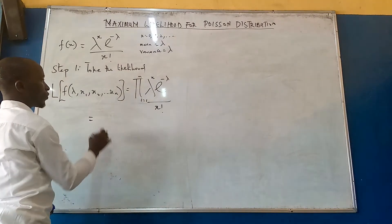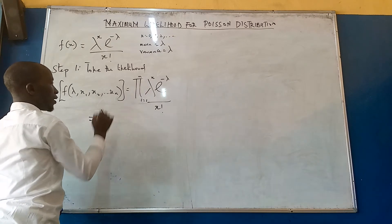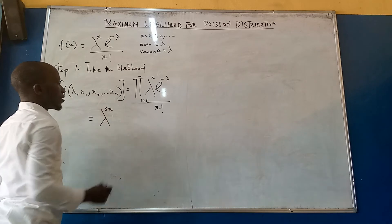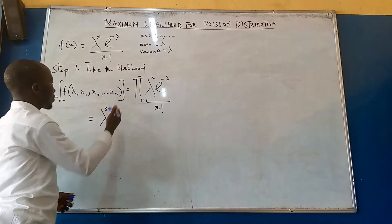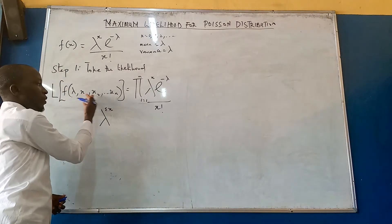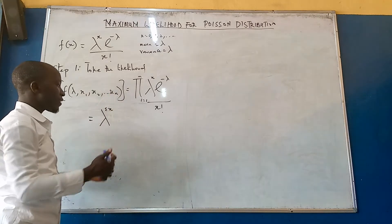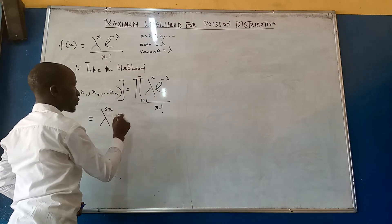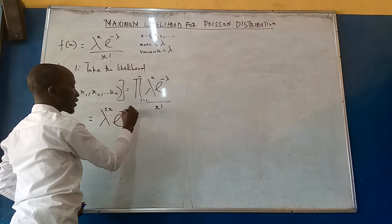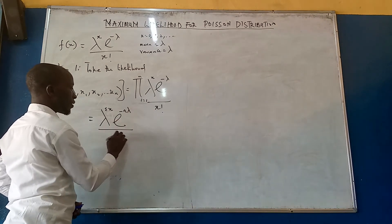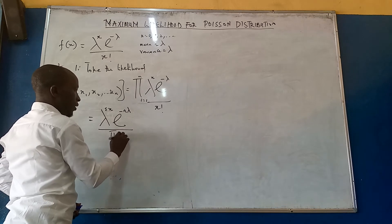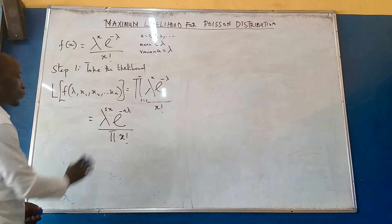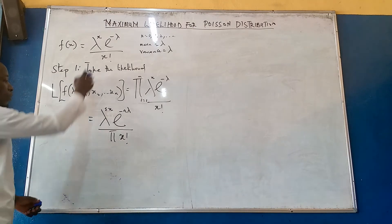This is going to give us lambda raised to summation x. Why we have summation x? Because we are having x from x1, x2, to xn. So adding everything together, we'll have summation x, then we have exponential minus n lambda, divided by x factorial. We already have this, we are taking the likelihood of the distribution.